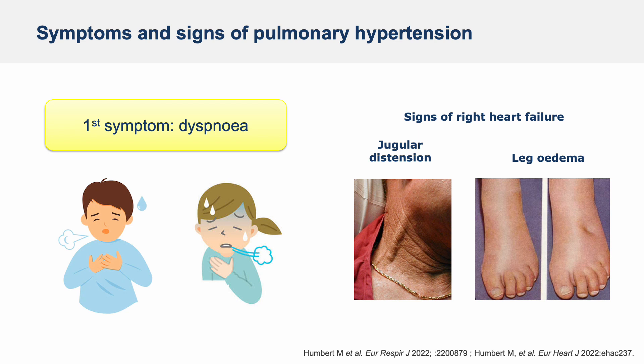If you now look at the clinical signs of pulmonary hypertension, they are usually unremarkable, but in advanced forms of PH we can observe signs of right heart failure, including peripheral oedema or distended jugular veins. This explains why a patient's journey from the onset of symptoms to the diagnosis of PH can take a long time, sometimes several years, because none of the clinical signs and symptoms are specific to the disease.